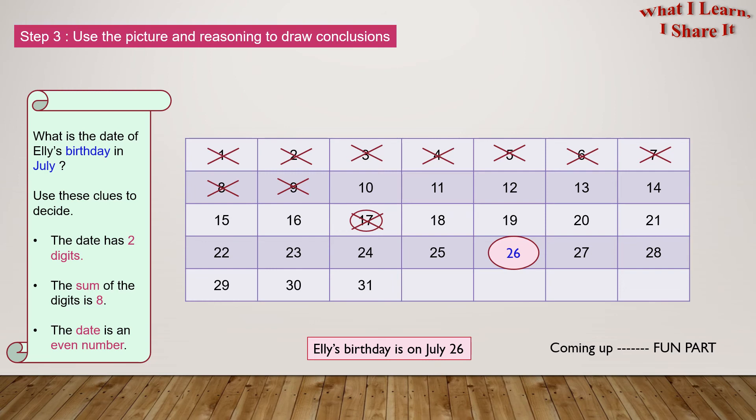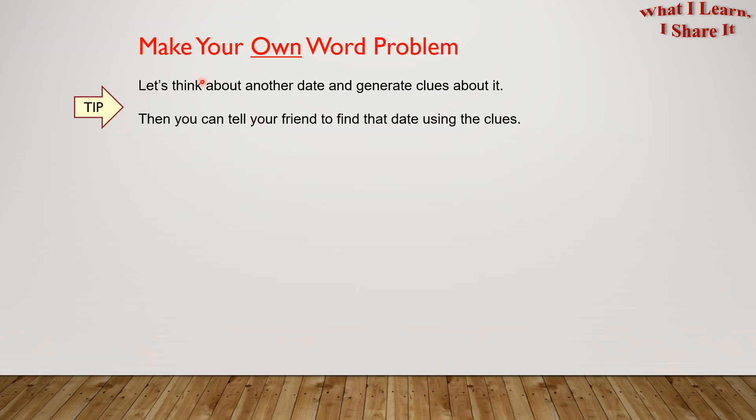Coming up is the fun part and that is... Make your own word problem. Here's a tip: Let's think about another date and generate clues about it. Then you can tell your friend to find that date using clues. Here's an example.